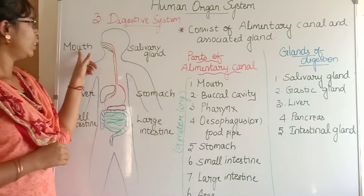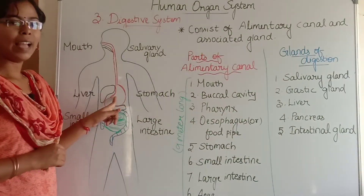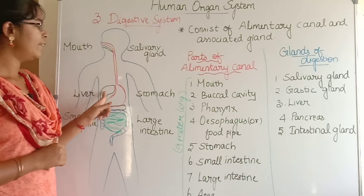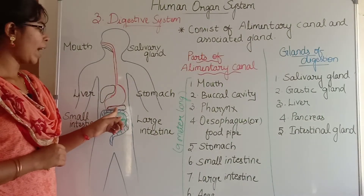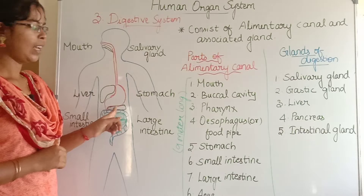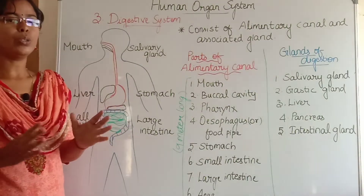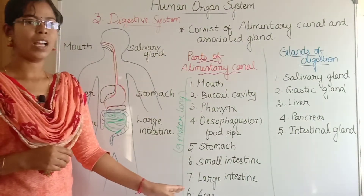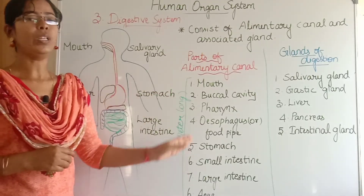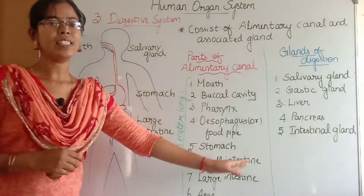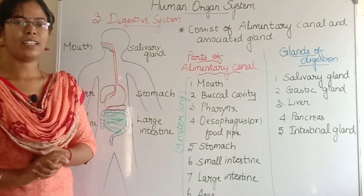Associated glands include: the salivary gland in the mouth, gastric gland in the stomach, glands in the liver, glands in the pancreas, and intestinal glands in the intestine. With the help of all these glands along the 9-meter-long canal, the food gets digested.